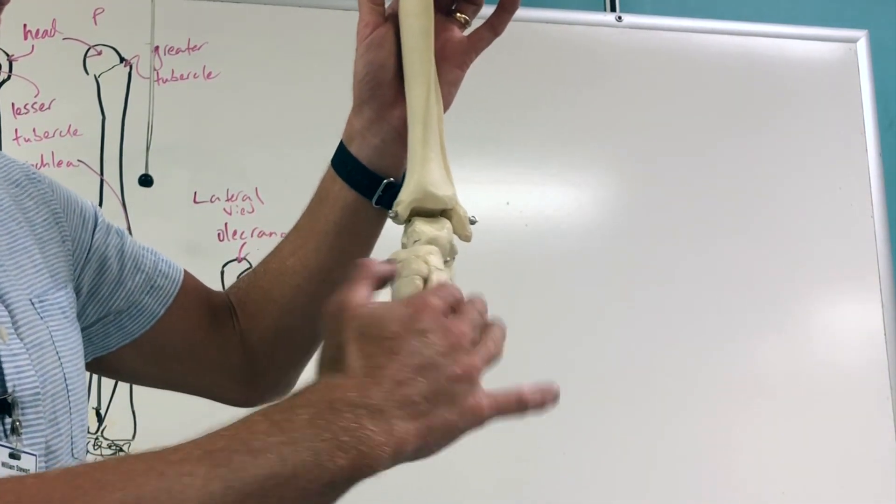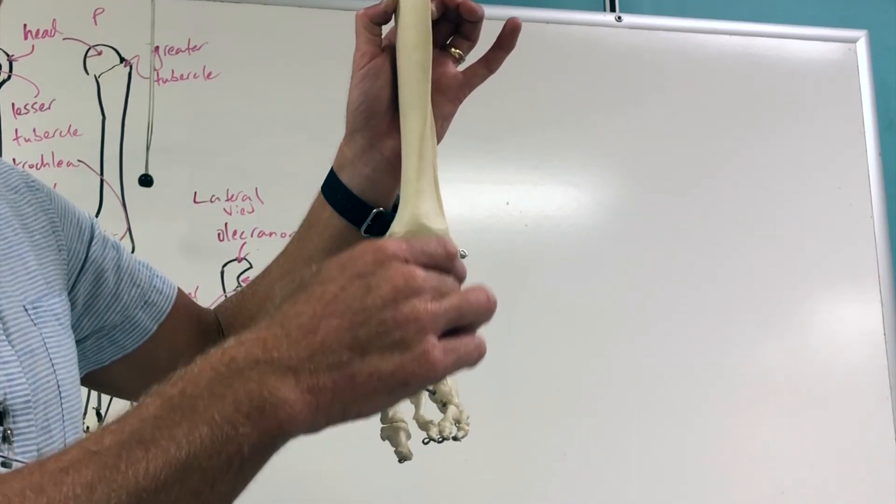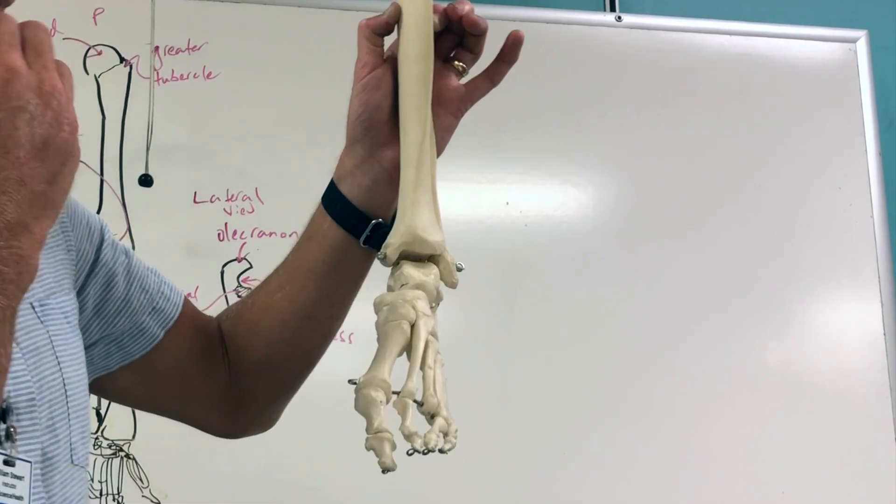These are all the metatarsals. Metatarsal one, two, three, four, five, and then the phalanges. The phalanges are the hallux and then toes number two, three, four, and five.